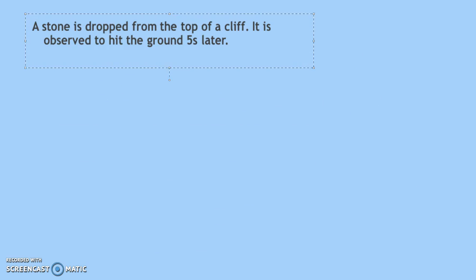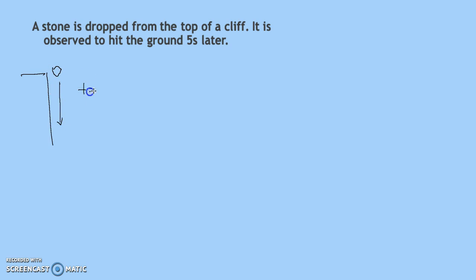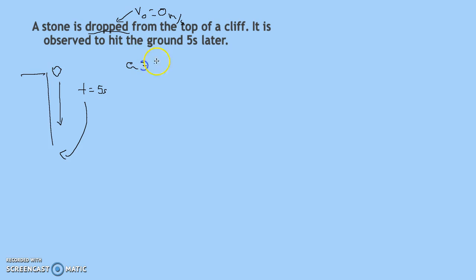Now we're going to analyze a scenario in which we have a stone being dropped from the top of a cliff and it hits the ground five seconds later. In this question, we know how long it's going to fall for and we know that it was dropped. When we drop something, that's a hint that our initial velocity is equal to zero meters per second. Since it's falling and it's in free fall, our acceleration is equal to 9.8 meters per second squared.